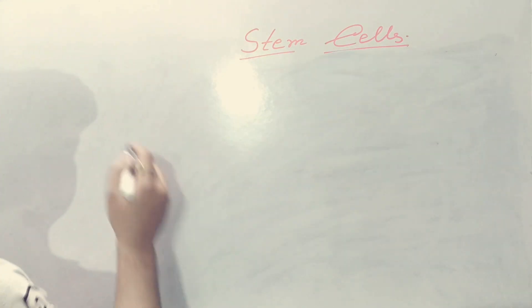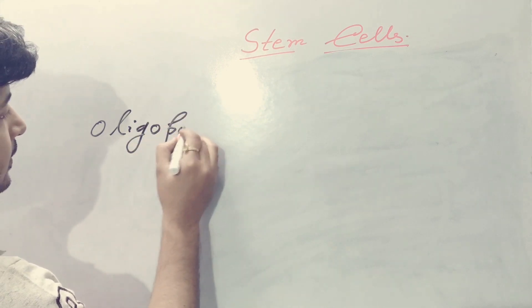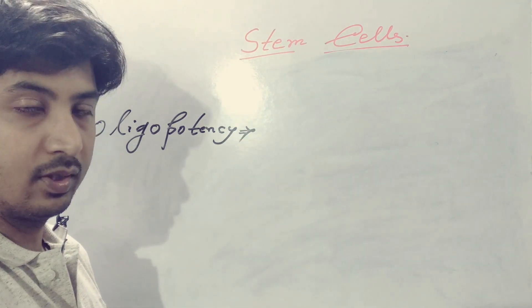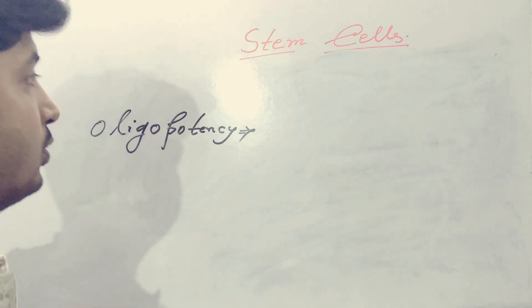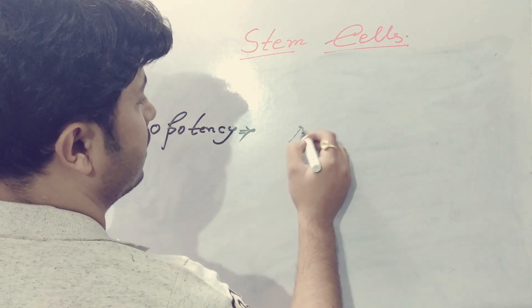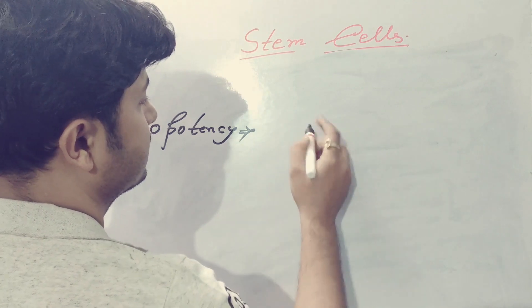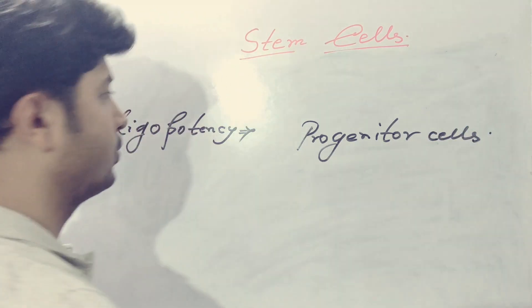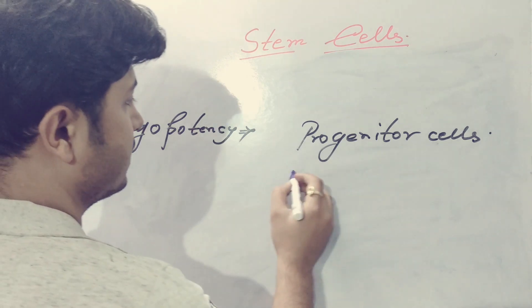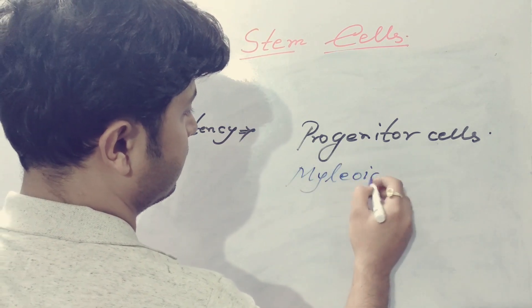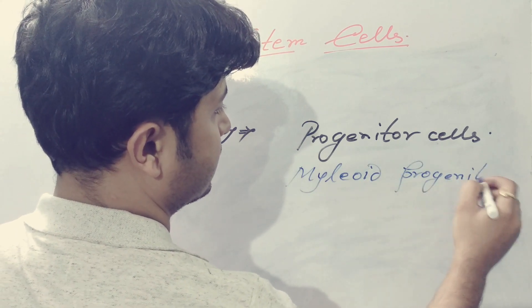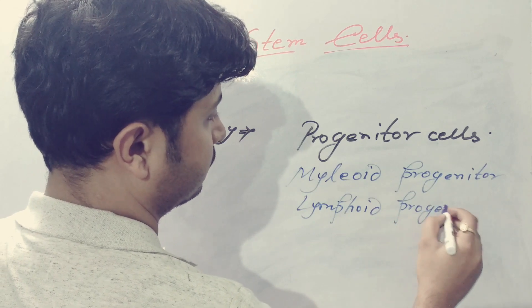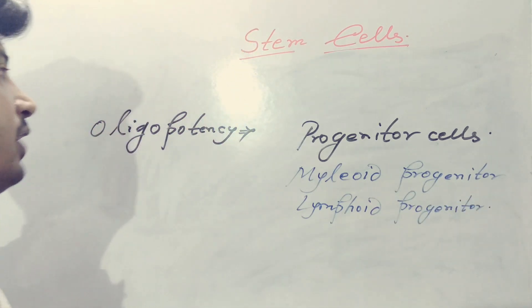Next is oligopotency. Their field is narrower than multipotent cells, as they can be very focused on just two kinds of cells. Oligopotency actually deals with progenitor cells, and they can differentiate into two types: myeloid progenitor cells and lymphoid progenitor cells. These two cell types can be divided from oligopotent cells.